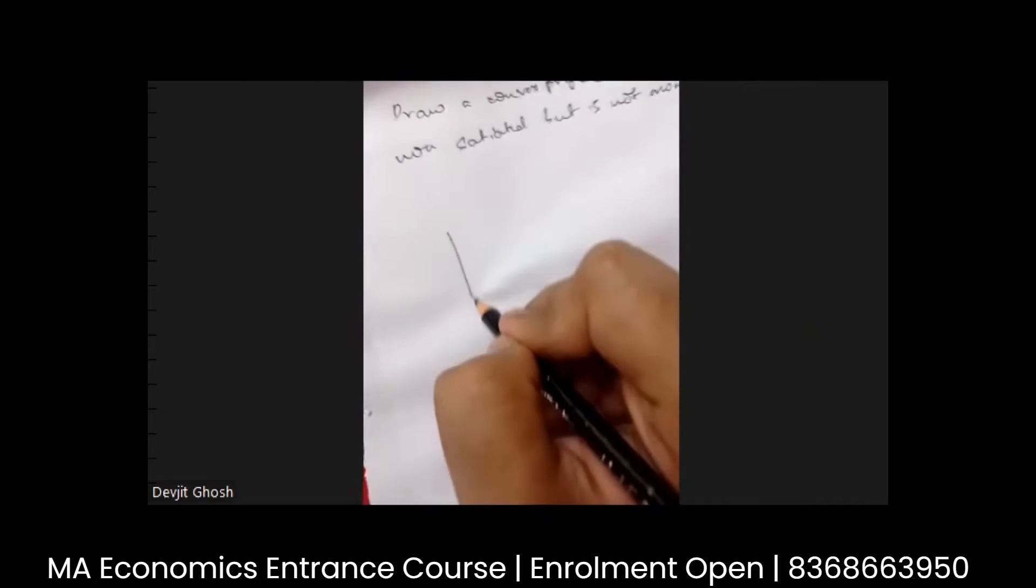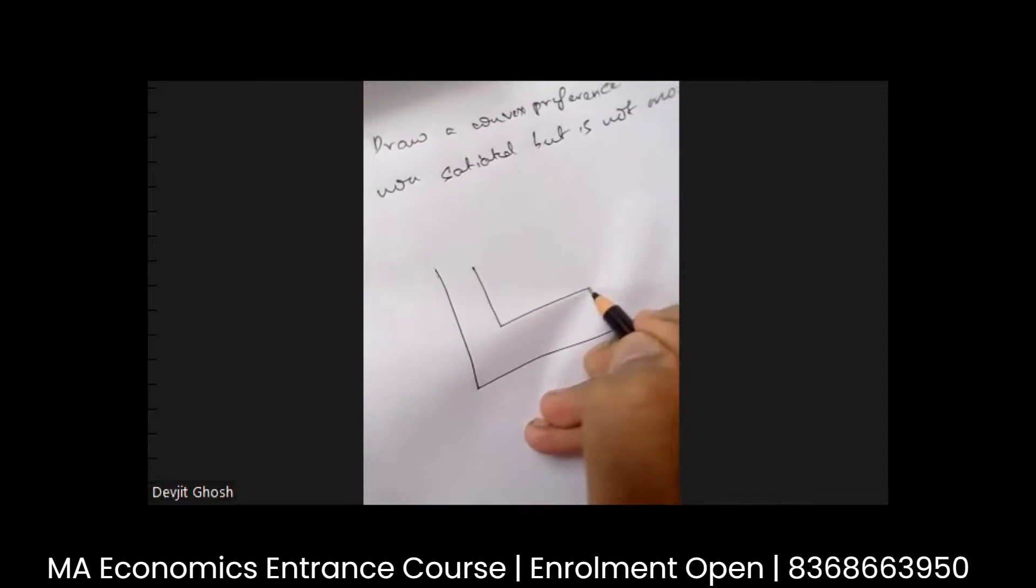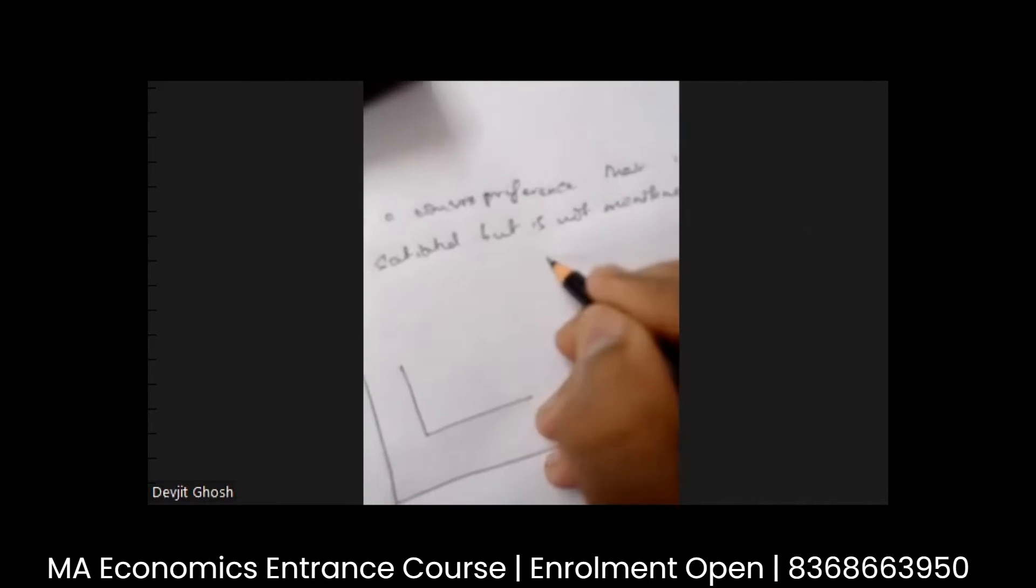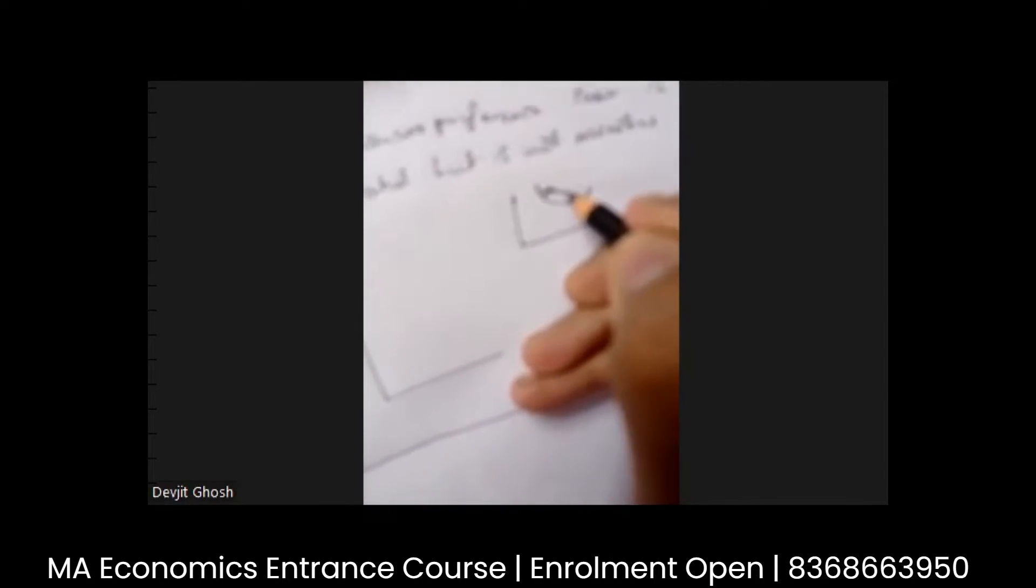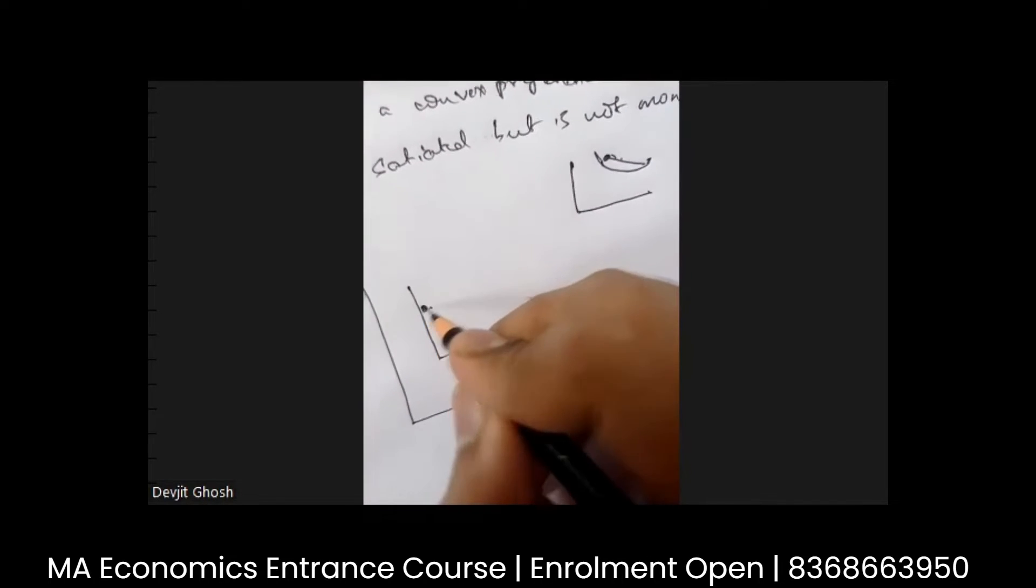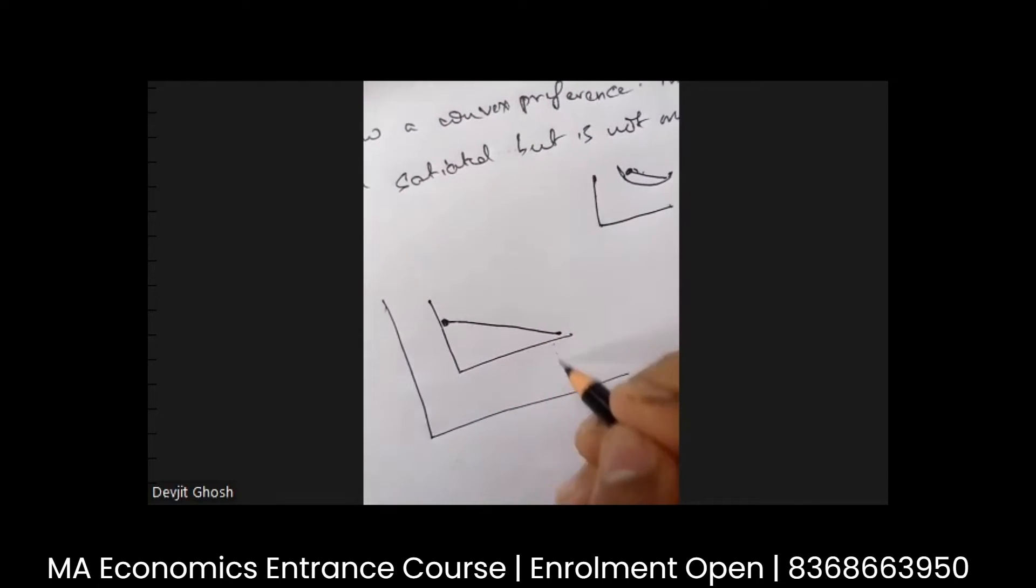Ma'am, a min function is like this. Okay. So as per the definition of a convex, that is, if I consider two points, this point and this point,